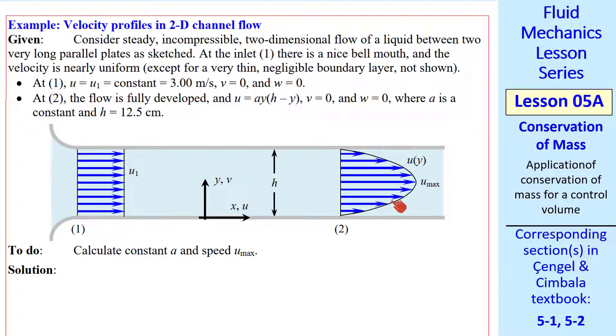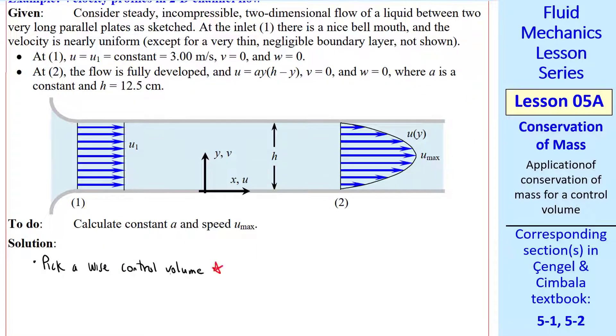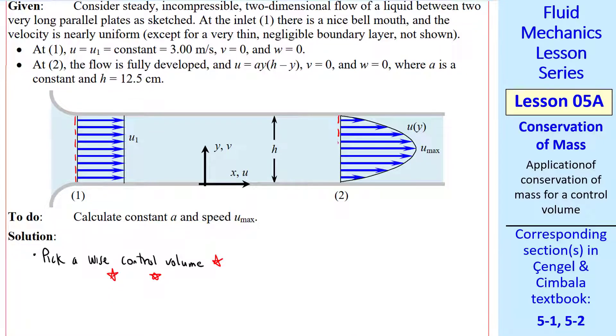This profile shape stays the same if we continue further downfield. And nothing is a function of Z into the page. Again, the first step is to pick an appropriate control volume. I definitely want to slice through the inlet, and I want to slice through 2 as my outlet. And we enclose the control volume between the walls.